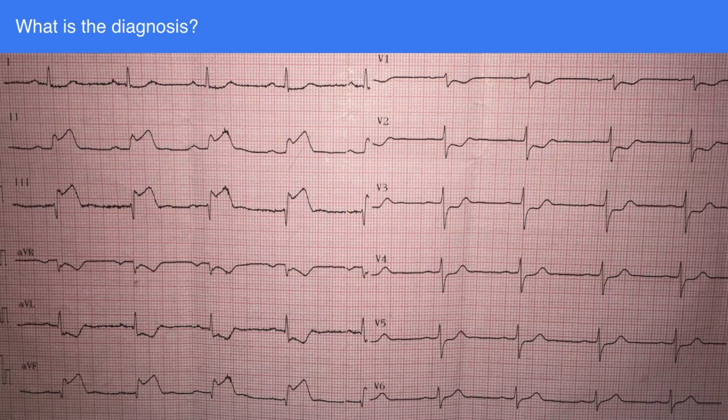What's abnormal here is that there is ST segment elevation with upward concavity. This is important to note because if it's upward convexity, that would indicate pericarditis. Characteristically, myocardial infarction follows the arterial distribution, unlike pericarditis which would be generalized in most — if not all — leads. So in this patient, there is ST segment elevation.